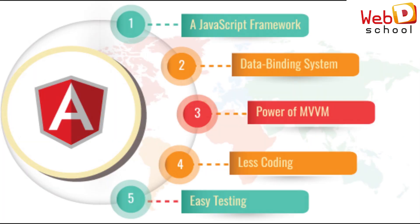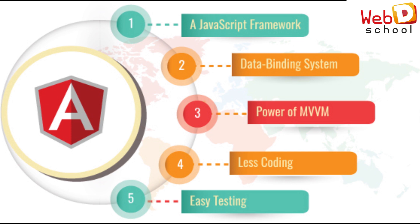Whenever you want to work with Angular, you download the code setup from Angular CLI, develop your code, build it, test it, create a production bundle, and deploy it to the server. React is a library, so you have to define your own architecture by blending multiple libraries to create one solid architecture.